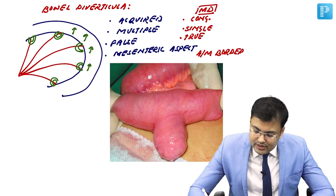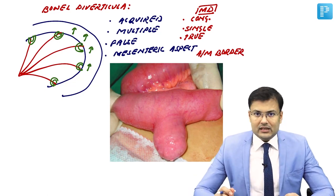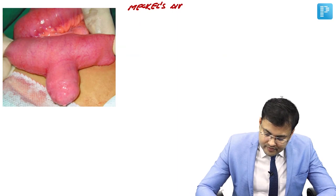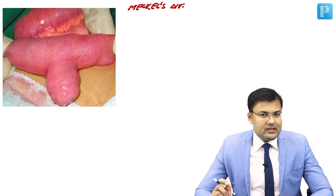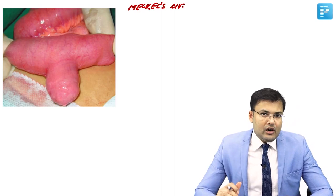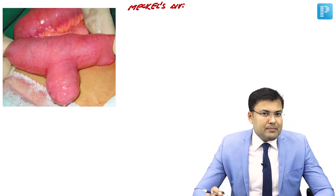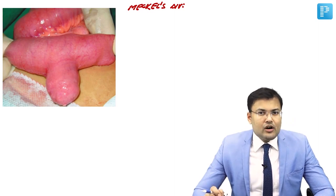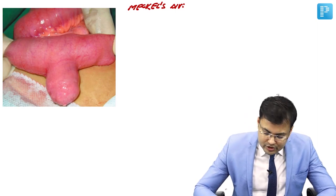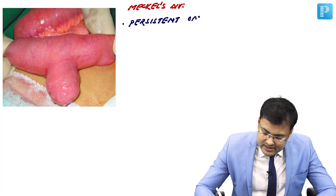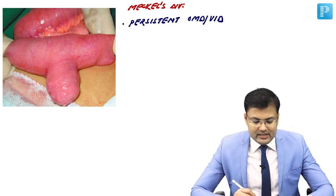This is very important. Meckel's diverticulum is congenital, single, true, and located along the anti-mesenteric border. Meckel's diverticulum is caused by persistent omphalomesenteric duct, also known as the vitelointestinal duct.